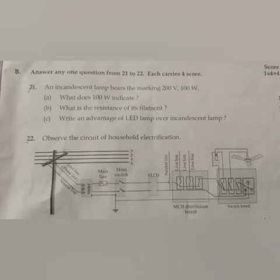Question 21: An incandescent lamp bears the marking 200 volt, 100 watt. (a) What does 100 watt indicate? Answer: 100 watt indicates the maximum power of the bulb when it is used at 200 volt supply. (b) What is the resistance of its filament?